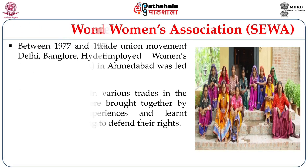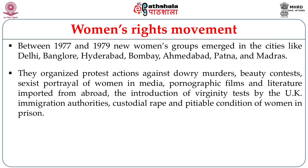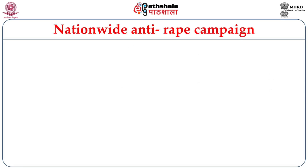Women's rights movements — between 1977 and 1979, new women's groups emerged in cities like Delhi, Bangalore, Hyderabad, Bombay, Ahmedabad, Patna, and Madras. They organized protest actions against dowry murders, beauty contests, sexist portrayal of women in media, pornographic films and literature imported from abroad, the introduction of virginity tests by UK immigration authorities, custodial rape, and pitiable conditions of women in prison.